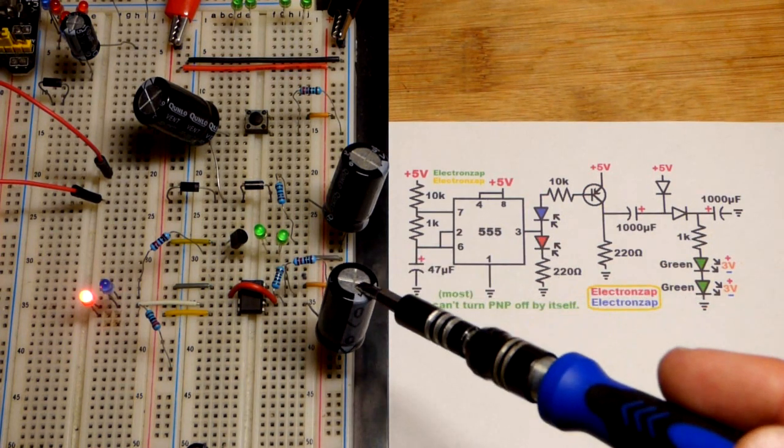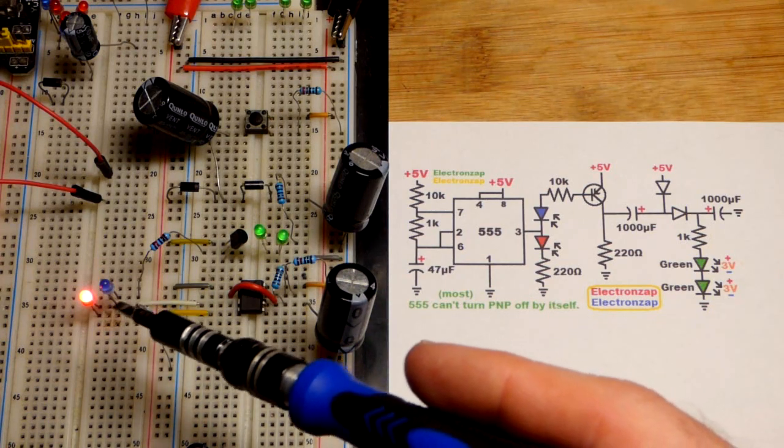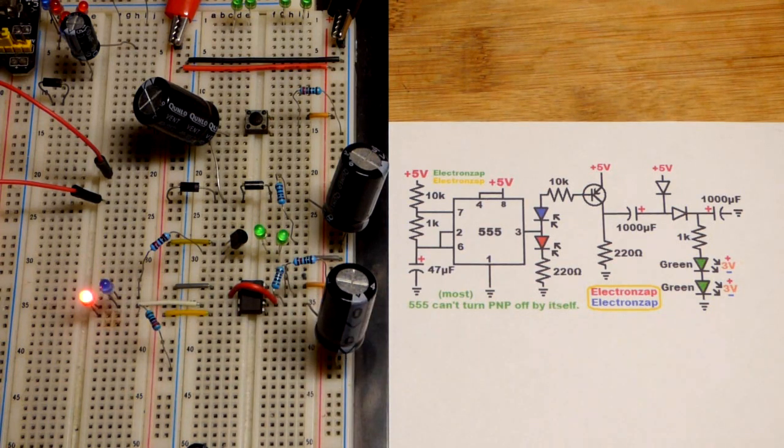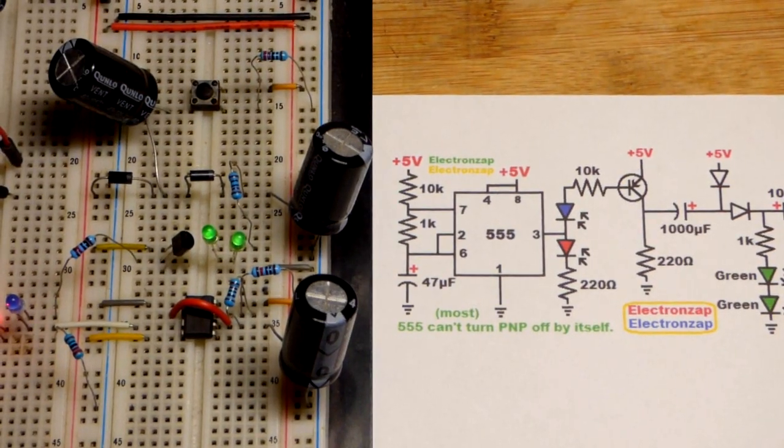So right now I have 470 microfarad not the 47 microfarad so it's flashing about one tenth of the speed that it will later on. Later on we'll get it flashing 10 times faster and we're going to get it going about 20 times faster too.